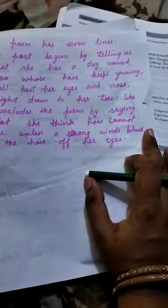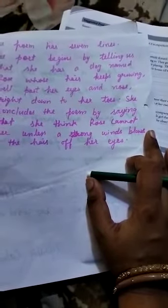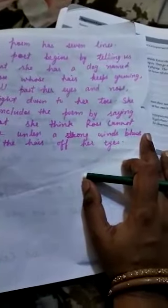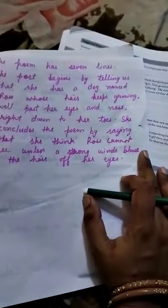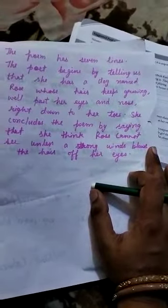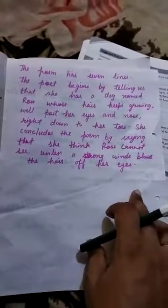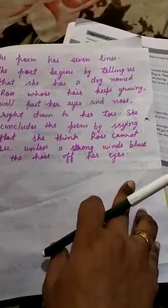The poet has a dog and her name is Rose, whose hair keeps growing well past her eyes and nose, right down to her toes. She concludes the poem by saying that she thinks that Rose cannot see, unless a strong wind blows the hair from her eyes.